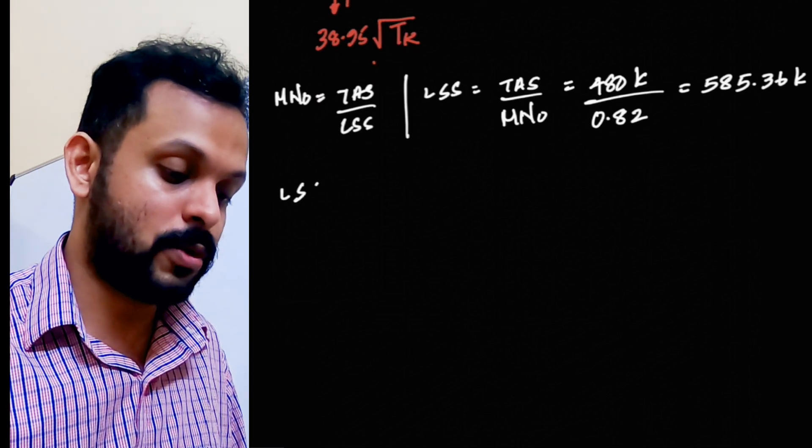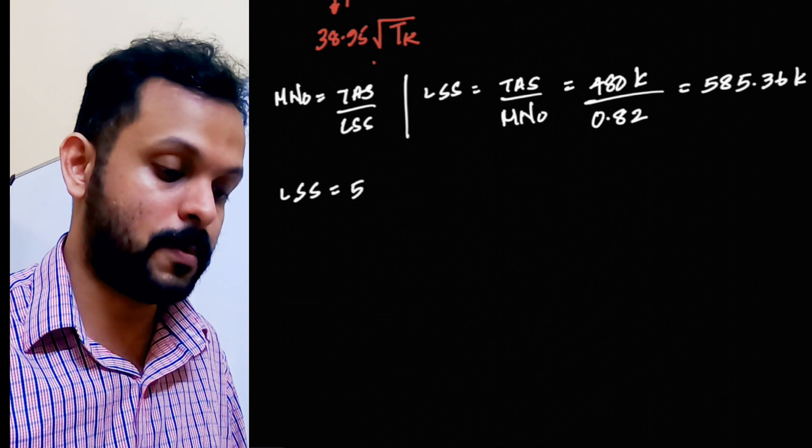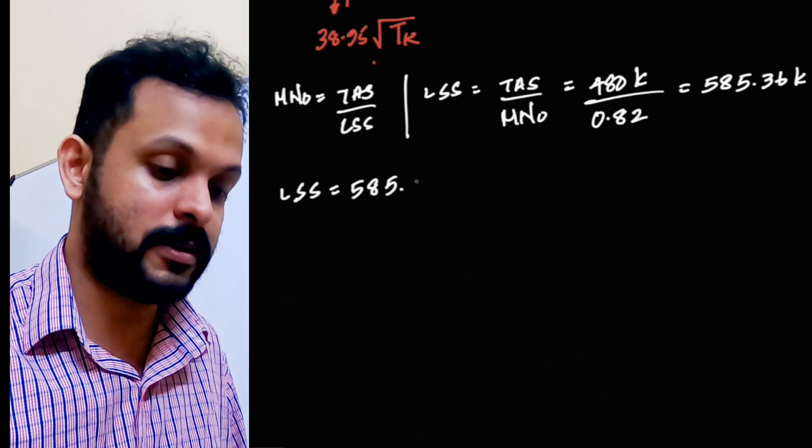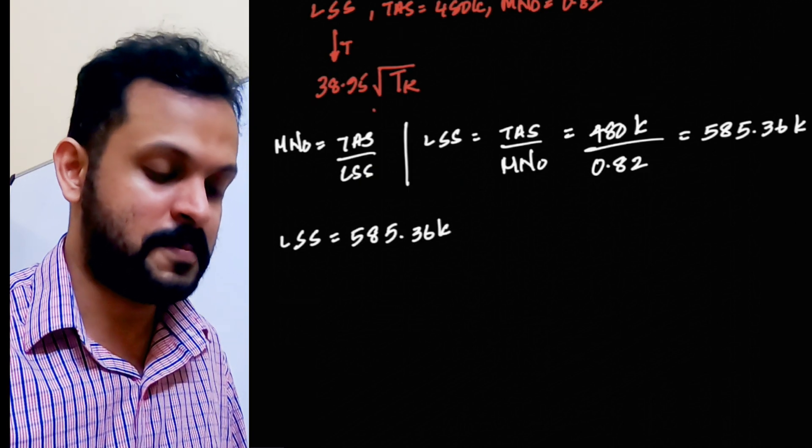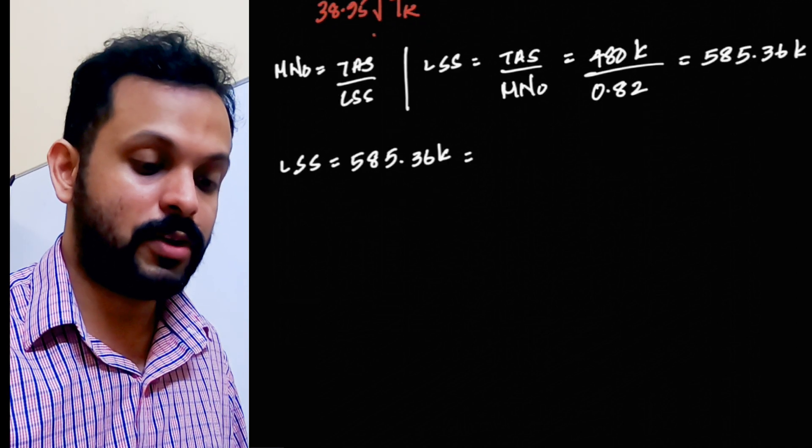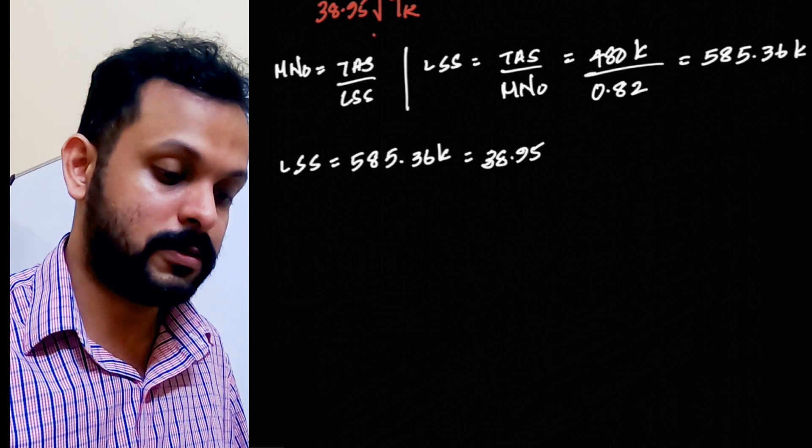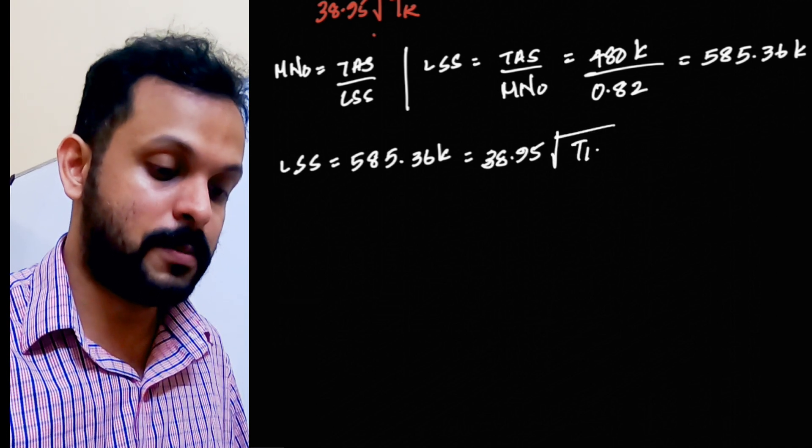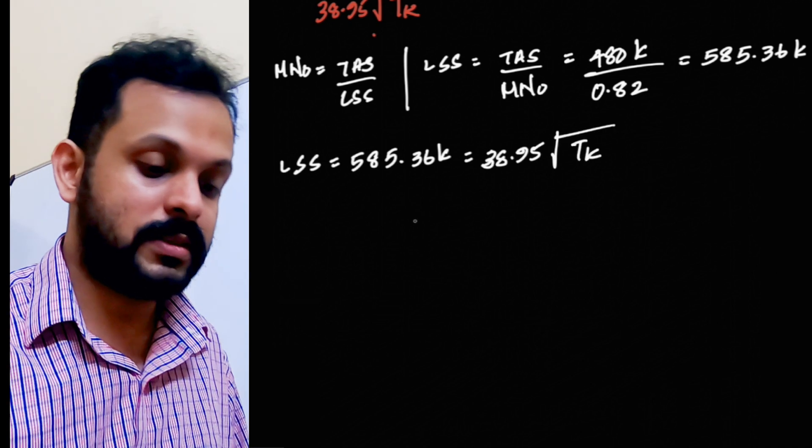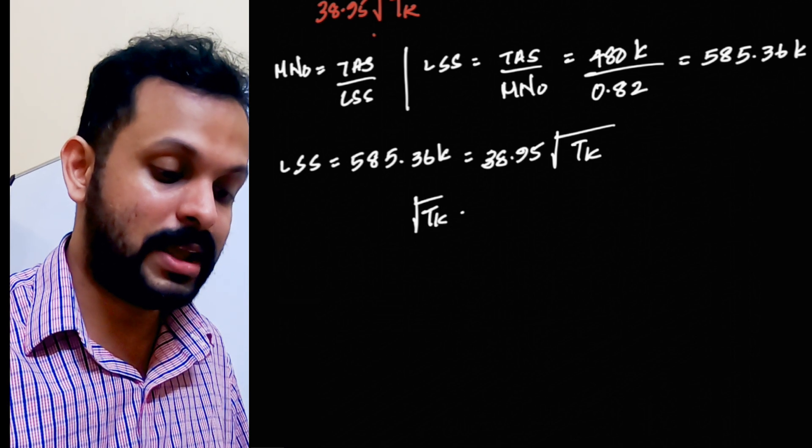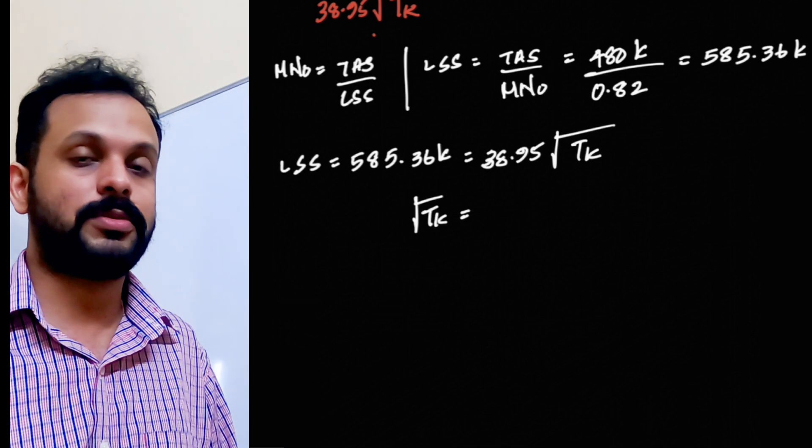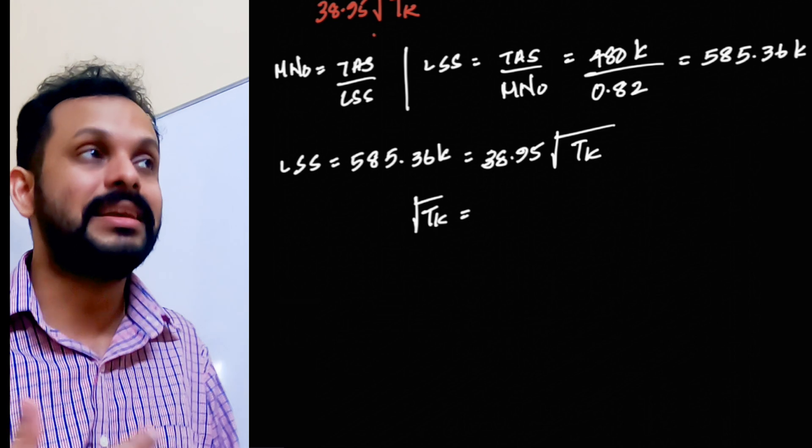Now, we have the basic relation here. Local speed of sound, which is equal to 585.36 knots, is equal to, well, we have the equation 38.95 times the square root of temperature in Kelvin. Now, let's see how this can be solved.